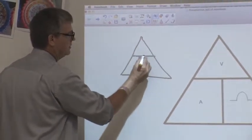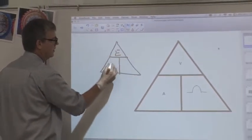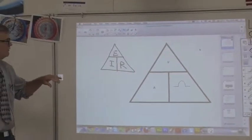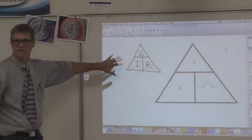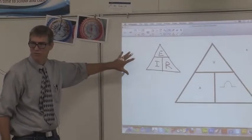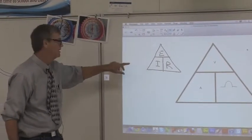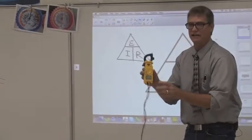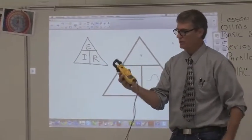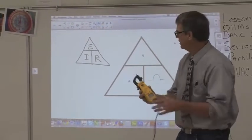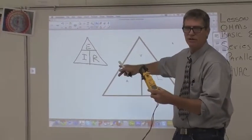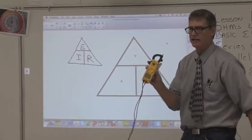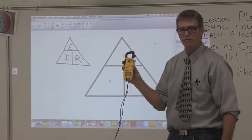Ohm's Law looks like this, E over IR. And we're going to forget that Ohm's Law right now and we're going to use Terrell's Law. Terrell's Law says that, and electricians, this would be the same thing with electricians. If you've got a voltmeter, you're not going to see E anywhere, so we're going to forget E. You're not going to see I anywhere for amperage, so we're going to forget I.